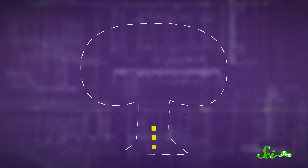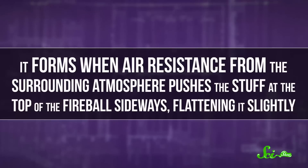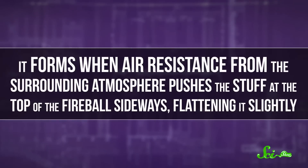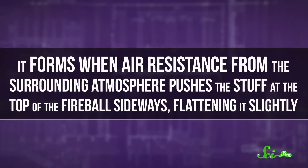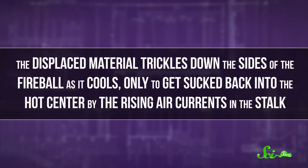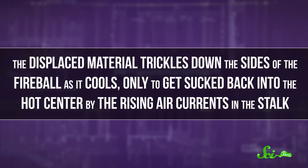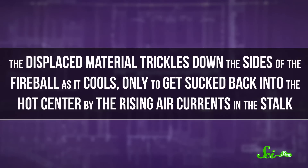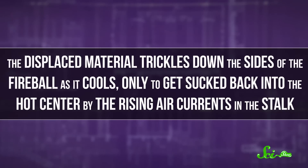It starts out the way you'd think a fireball would, like a sphere. But then, forces transform it into that iconic mushroom shape. The cap of a mushroom cloud is actually shaped like a horizontal doughnut of rotating winds — a huge smoke ring constantly turning itself inside out. It forms when air resistance from the surrounding atmosphere pushes the stuff at the top of the fireball sideways, flattening it slightly. The displaced material trickles down the sides of the fireball as it cools, only to get sucked back into the hot center by the rising air currents in the stalk.